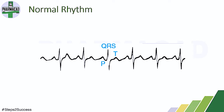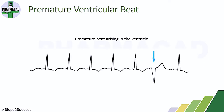This is the electrocardiogram of a healthy person — you can see the P wave, QRS wave, and the T wave. The first type of cardiac arrhythmia is premature ventricular beat. In this, there is a premature beat arising in the ventricle, shown as an inverted QRS wave on the electrocardiogram.